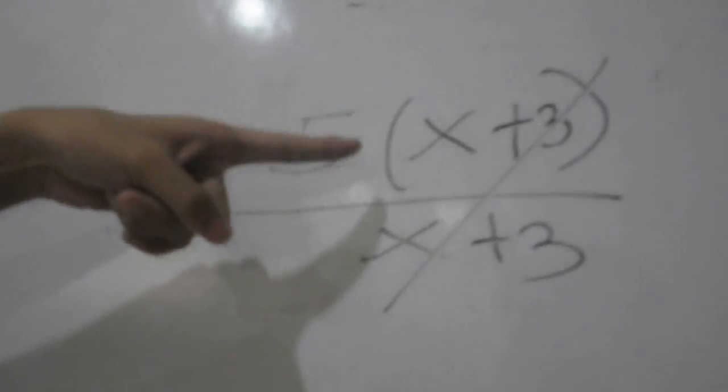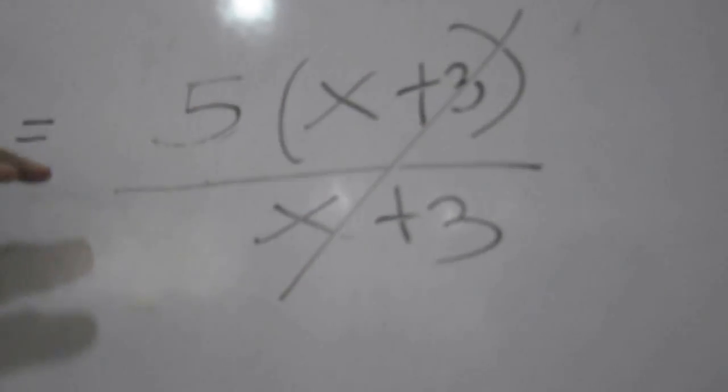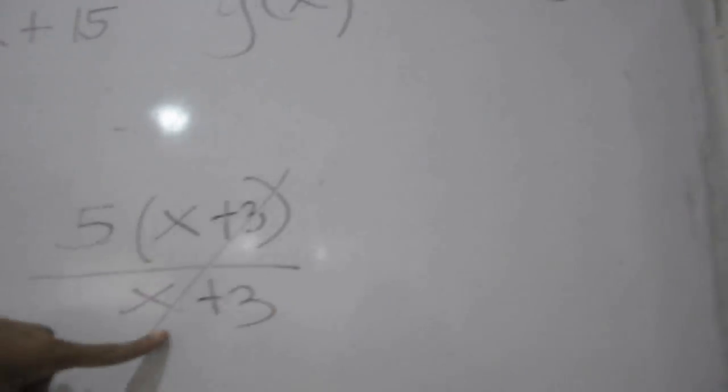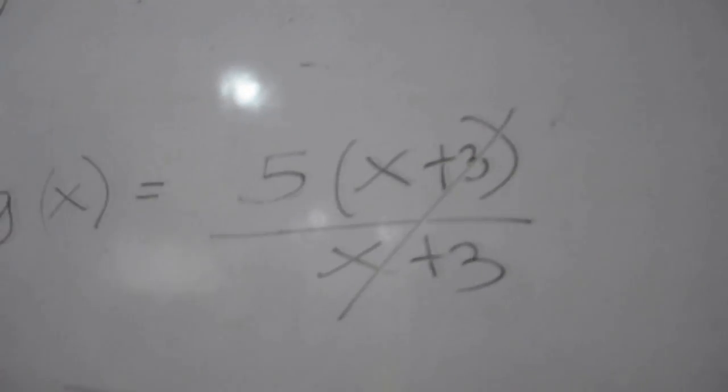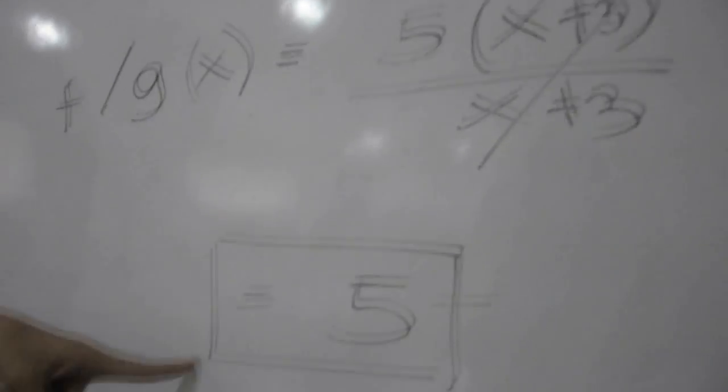The function of f is equal to 5 times x plus 3. Then we copy the x plus 3 and we put it here. Then we cancel out this x plus 3. Then we come up with the answer 5. That's it.